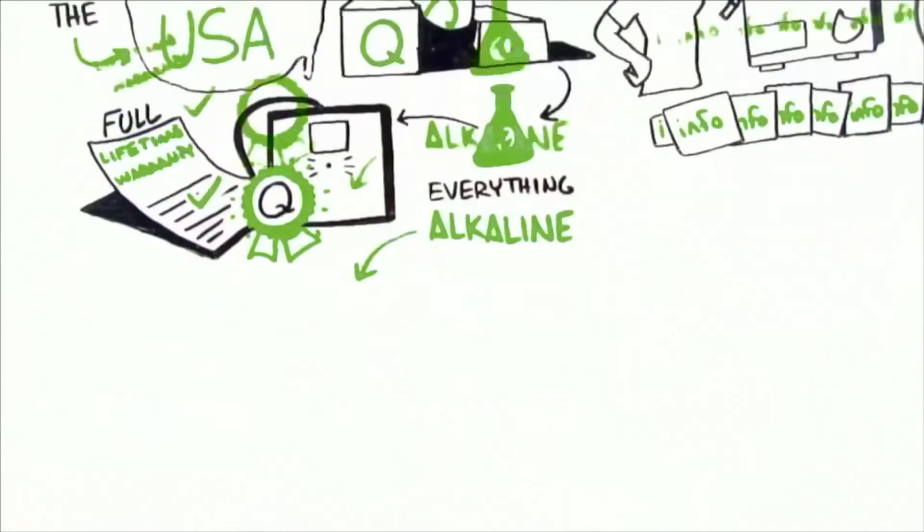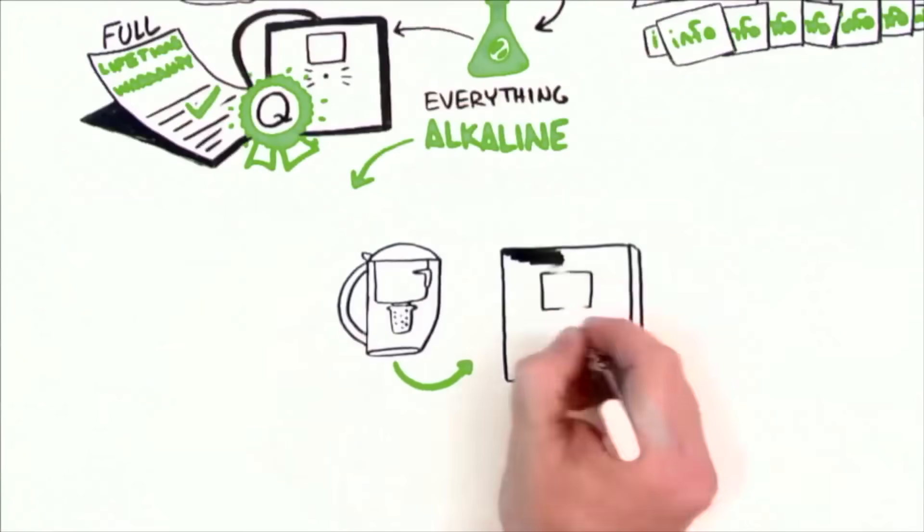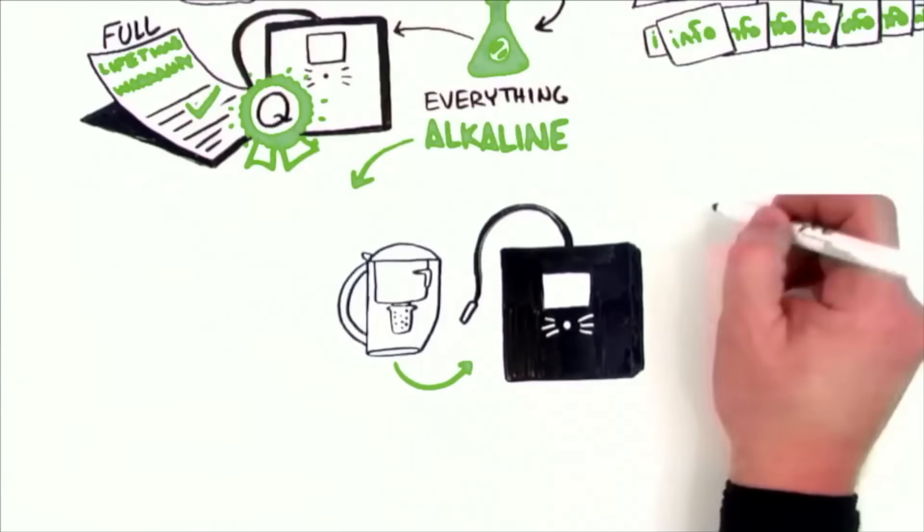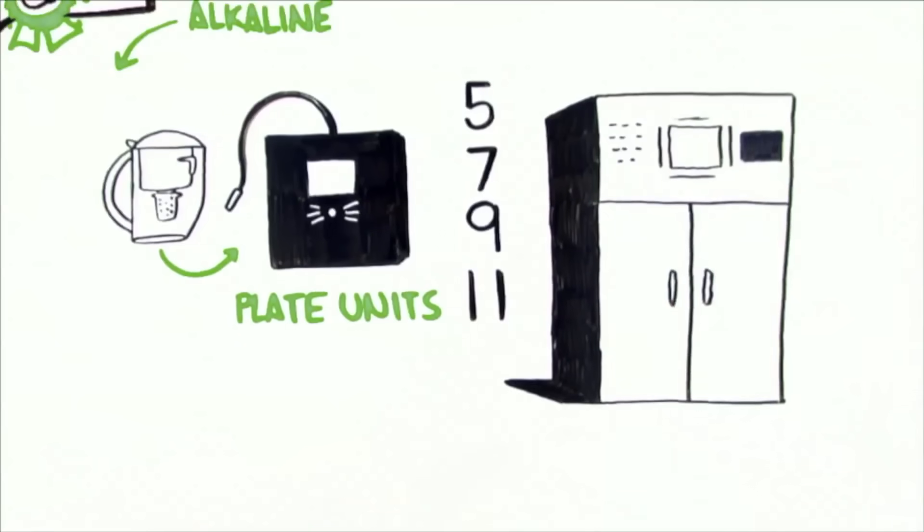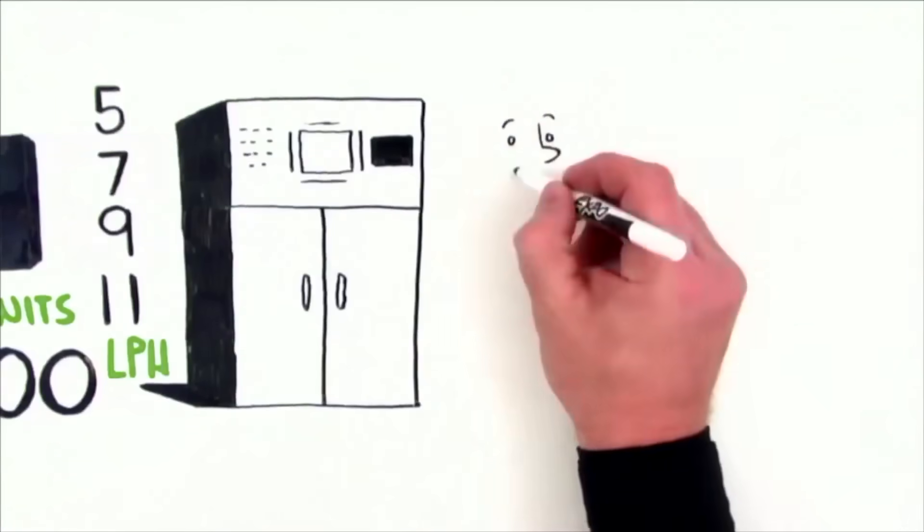Life has everything alkaline, from the travel-size Pitcher of Life to the residential water ionizers with 5, 7, 9, and 11 plate units, to the huge commercial units producing 8,000 liters per hour.